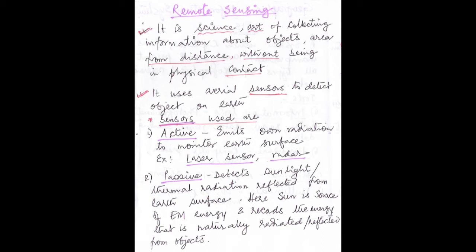In remote sensing, it uses aerial sensors to detect objects on the earth. Sensors used can be number one active, or number two passive. In active sensors, it emits its own radiation to monitor the earth surface — for example laser sensors and radar. In passive sensors, it detects the sunlight or bithermal radiation which is reflected from the earth surface. The sun is the source of electromagnetic energy, and the passive sensor records the energy that is naturally radiated or reflected from the object.